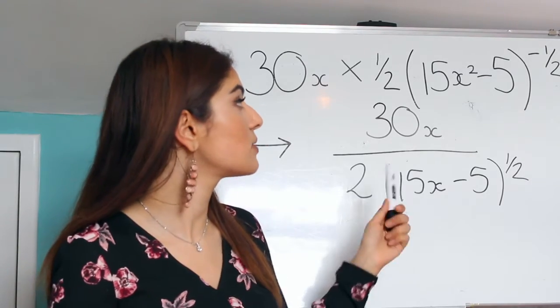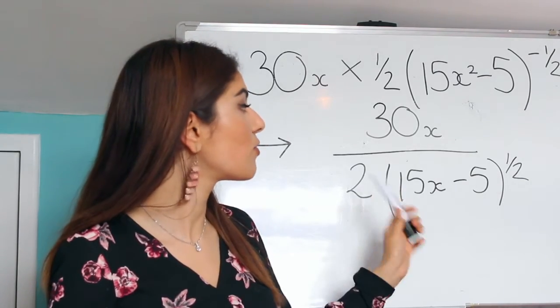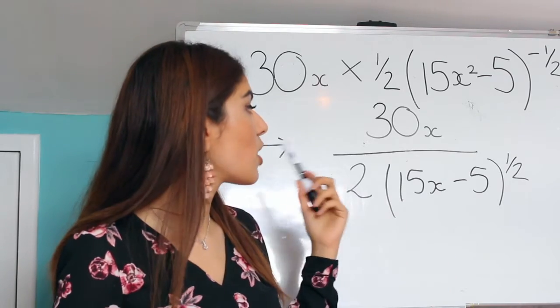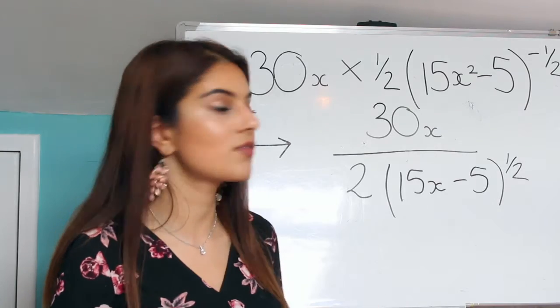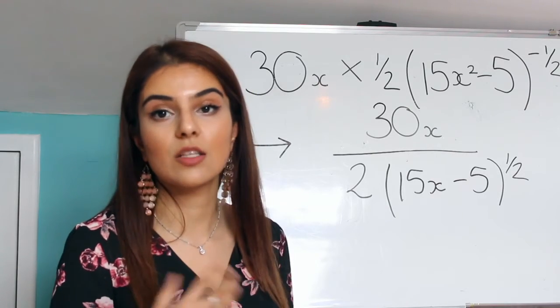So after timesing them, just to neaten it up a bit, I've just put it over a fraction. So now we would get 30x over 2 brackets 15x squared minus 5 to the power of a half.